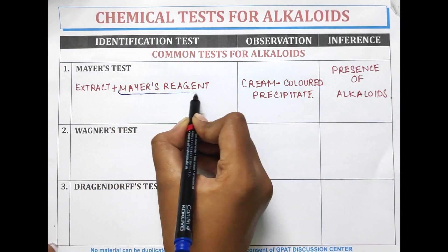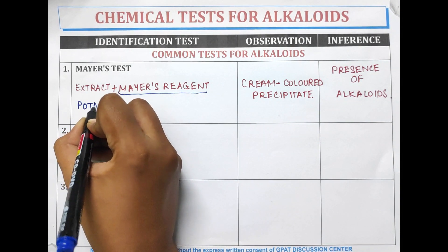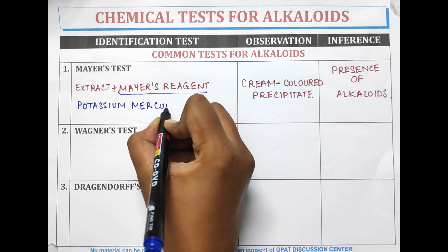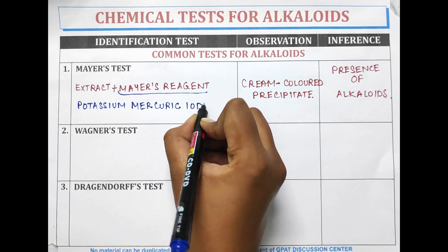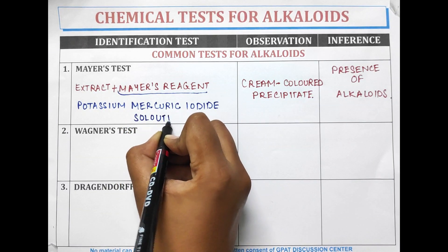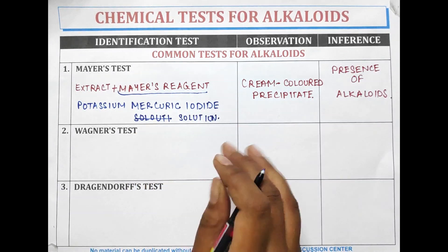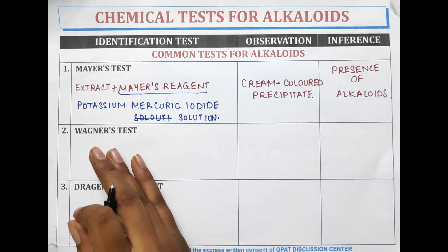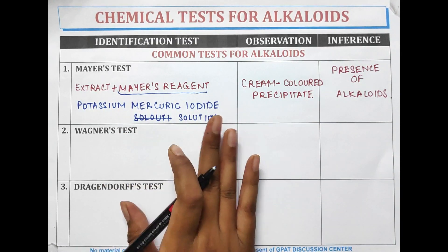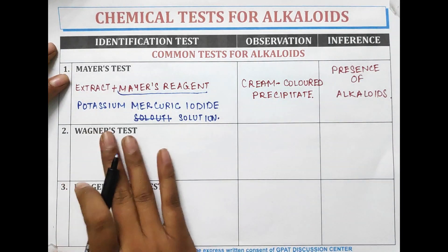What is present in Mayer's reagent? Mayer's reagent contains potassium mercuric iodide solution. It is important to remember the constituent of the reagent as well as the colour obtained. In Mayer's reagent, potassium mercuric iodide is used and the colour obtained is cream colour.